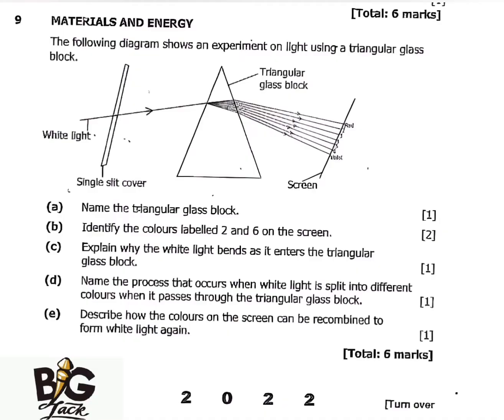This topic is very important and it is highly examinable. The question says: the following diagram shows an experiment on light using a triangular glass block. Here we have the white light coming from the sun, and here we have the single slit cover, and here we have the triangular glass block.